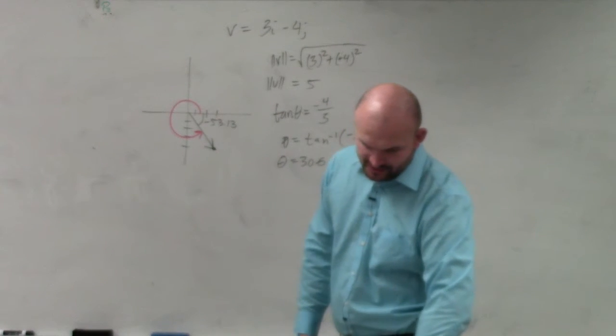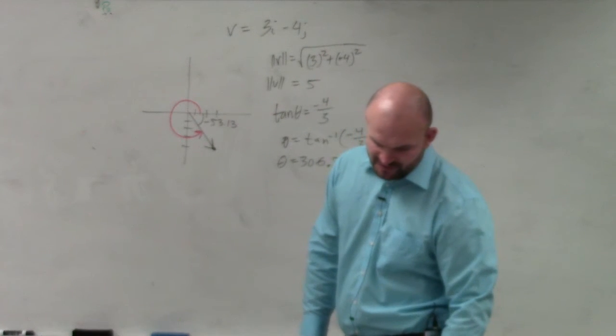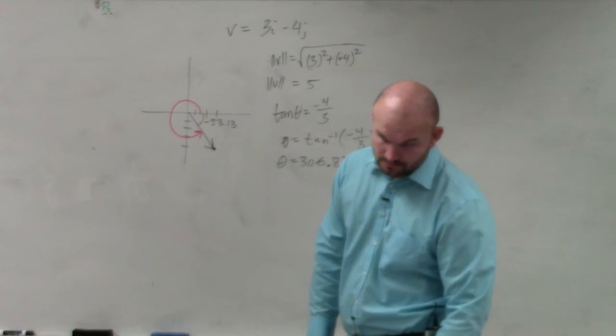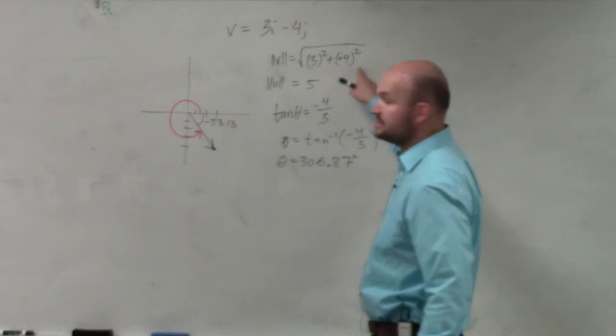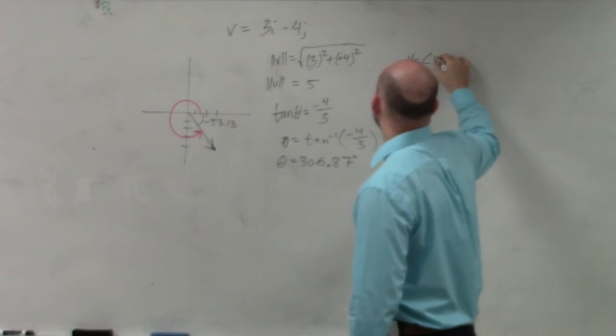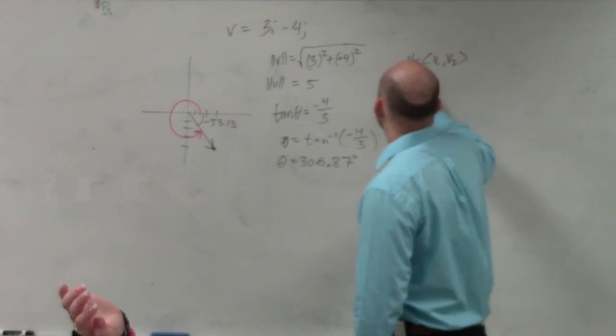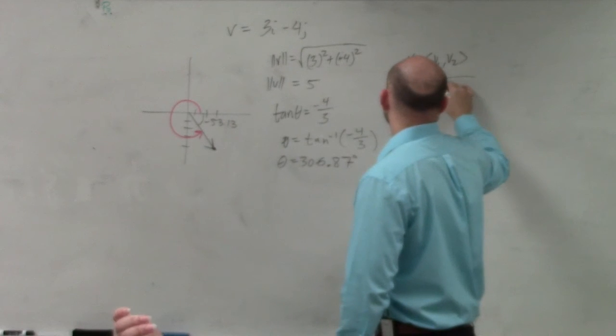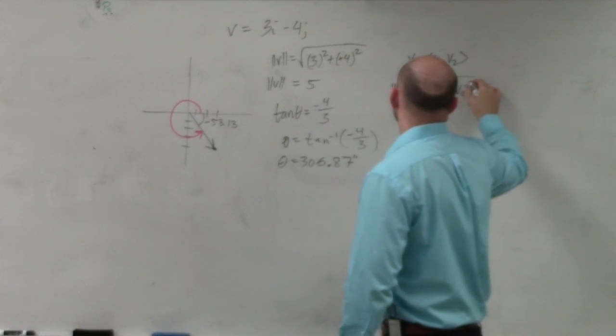The question says find the magnitude and direction of the angle of the vector. How did you know it's the square root of it squared? Because that's the magnitude formula. If you have a vector that's at V1 comma V2, the magnitude of the vector, which is the length, is equal to the square root of V1 squared plus V2 squared.